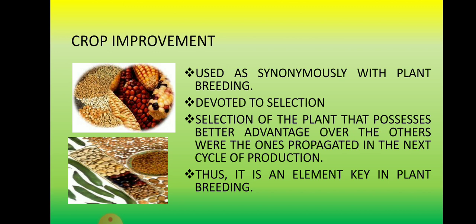Crop improvement is synonymous with plant breeding but is devoted to selection. If you collected 10 entries to be the donor parent of a certain variety, you need to select the best entry through a field trial or varietal evaluation. You plant and compare the ten varieties; the one with the best yield becomes the donor parent for the high-yielding trait.